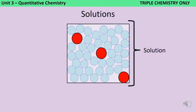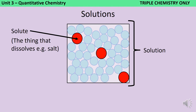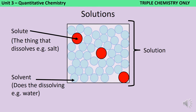In the previous video we saw that solutions were mixtures with two components: a solute, which is a soluble substance able to dissolve — something like salt, sugar, or any other ionic compound — and a solvent, which is a liquid that is able to dissolve the solute. It's the ratio between these two components that determines the concentration of the solution.